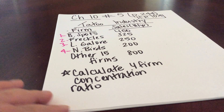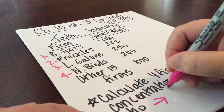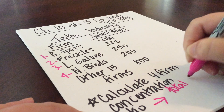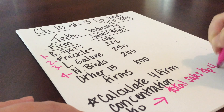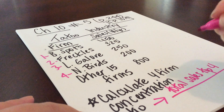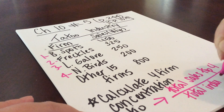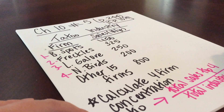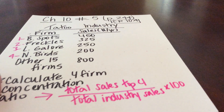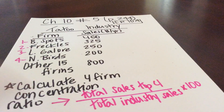To calculate the four-firm concentration ratio, we're simply going to take the total sales of the top four firms and divide this by total industry sales. We're looking for a percentage, so we'll multiply that times 100. It's the total sales of the top four firms divided by total industry sales times 100.